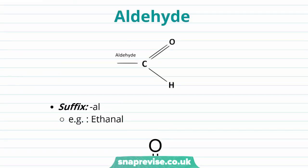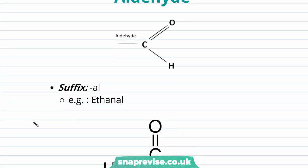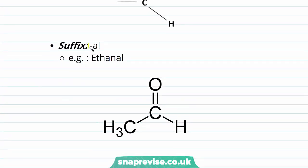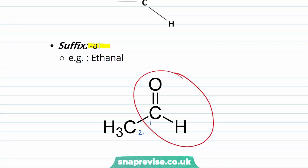Next is our aldehyde functional group. The aldehyde has a carbon double-bonded to an oxygen, and that carbon is also covalently bonded to a hydrogen atom. We usually see our aldehyde named in the suffix, using '-al'. Here we have a molecule with two carbon atoms, so the stem is 'eth', and with that aldehyde functional group, the name of this compound is ethanal.